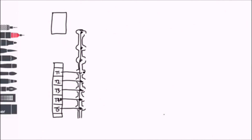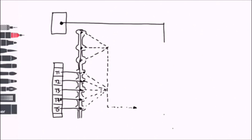We have sympathetic nerve fibres that come from T1 to T5 in the spinal cord. These send out pre-ganglionic fibres that enter into the sympathetic chain.